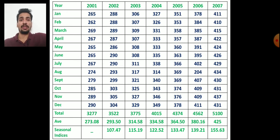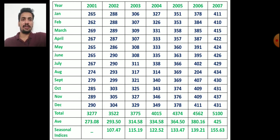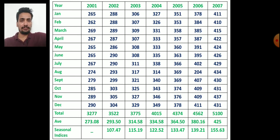Here we have a hypothetical example with data from years 2001 to 2007 — seven years of data. From this seven-year data we have to calculate the seasonal indices. The first step is to calculate the grand total for each year: 2001, 2002, 2003, 2004, 2005, 2006, and 2007.